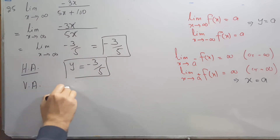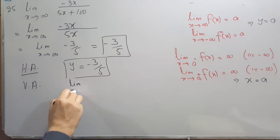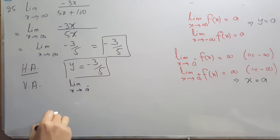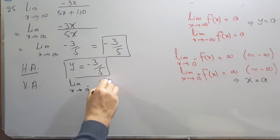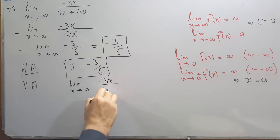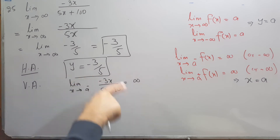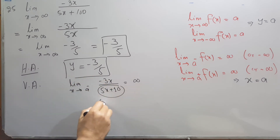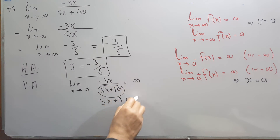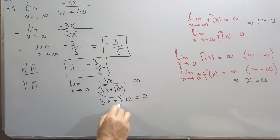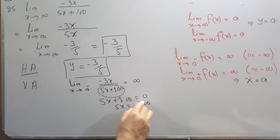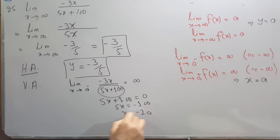For the vertical asymptote of this function, we need the denominator to equal zero. Setting 5x + 100 = 0 gives 5x = -100, and dividing both sides by 5 gives x = -20. So x = -20 is the vertical asymptote.